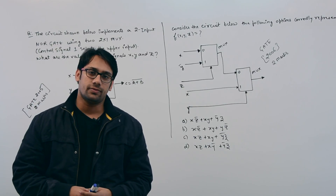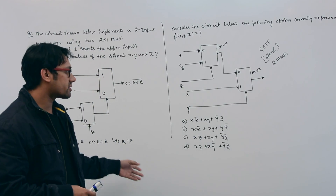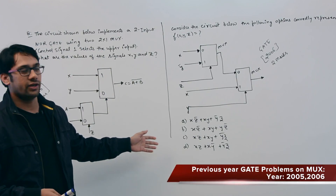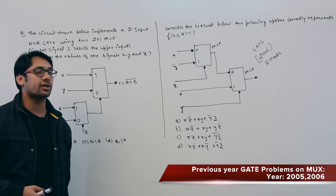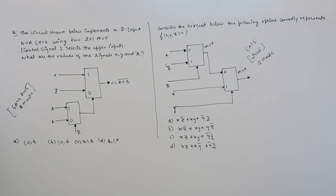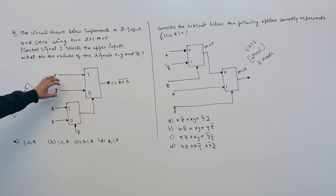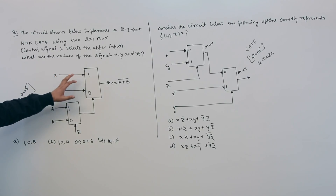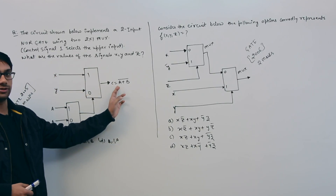Consider these two questions. The first question was asked in GATE 2005 and the second in GATE 2006. The first question states that the circuit shown below implements a two-input NOR gate using a 2×1 multiplexer. We are implementing a two-input NOR gate.